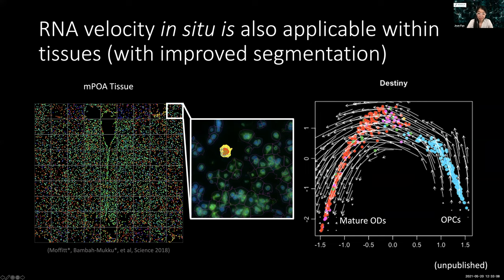RNA velocity was initially developed during the tail end of my PhD work in Peter Karchenko's group in collaboration with Stella Narsen's group. Initially developed for single-cell RNA sequencing rather than imaging-based approaches. Instead of using nuclear and cytoplasmic RNAs, we use spliced and unspliced mRNAs inferred from sequencing to perform the same type of modeling.